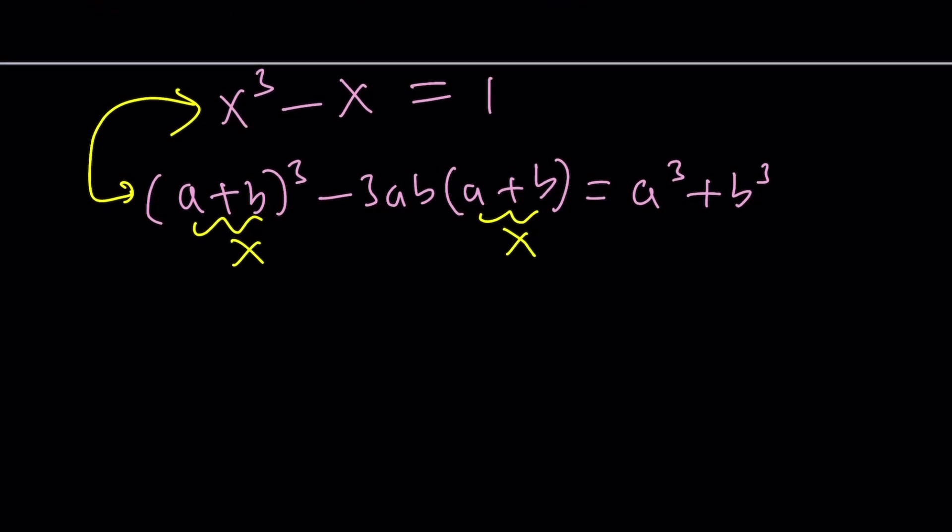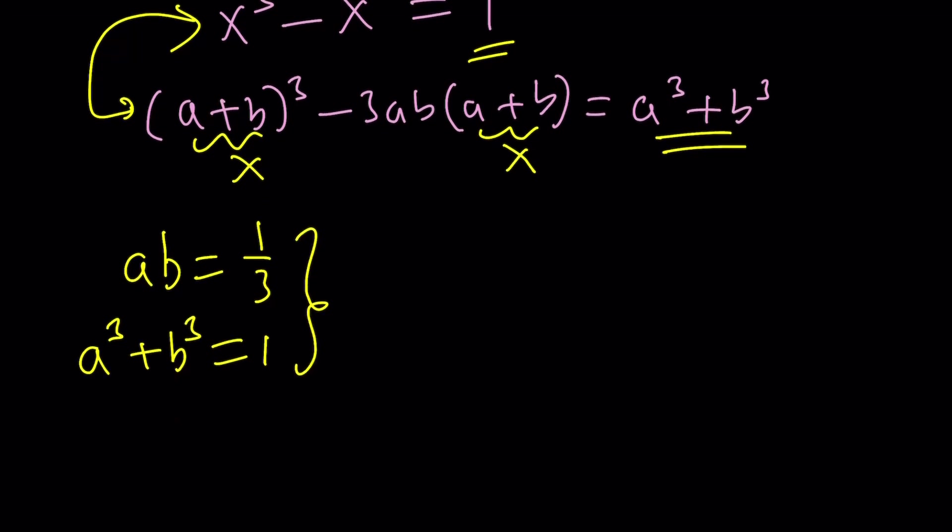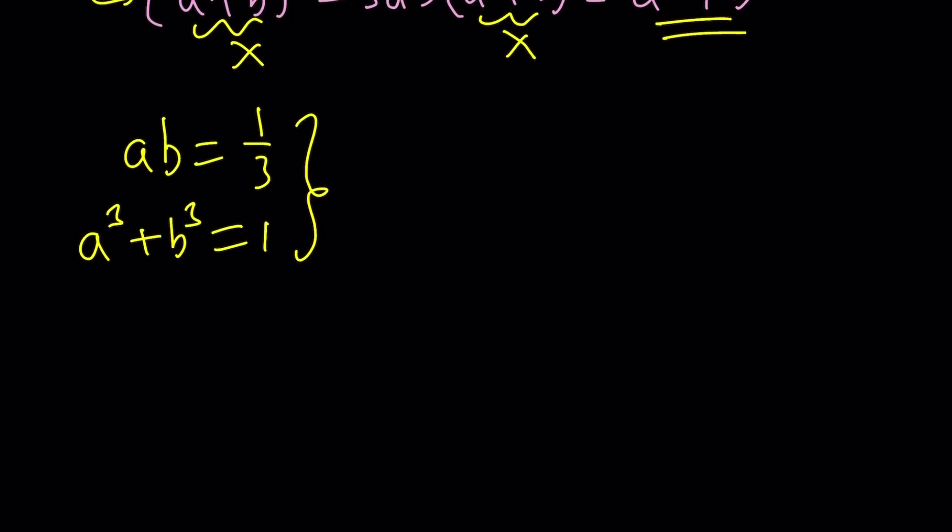To do that we're basically going to be looking at the coefficients of x. The coefficient of x here in the top equation is negative 1 and in the bottom one it's negative 3ab. So from here we get ab equals 1 third and the constant is a cubed plus b cubed which is equal to 1. So we get a system and this system is actually going to turn into something quadratic.